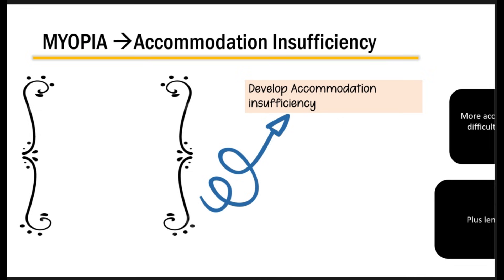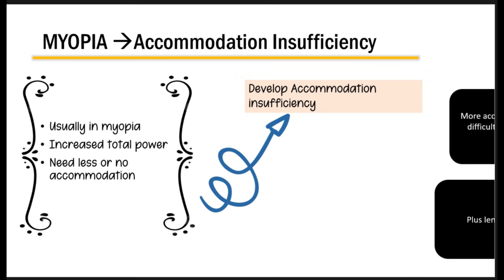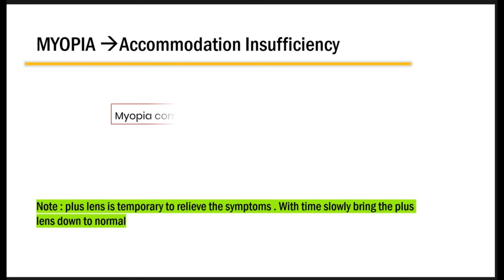There is a link between myopia and accommodation insufficiency. In myopia, the power of the eye is increased, so the patient has less need to accommodate, resulting in development of accommodative insufficiency. When treating myopia, give full correction in the form of minus glasses — any under-correction worsens accommodative fatigue by forcing more effort at near. You can also consider plus addition glasses for near as a temporary way to relieve symptoms, slowly reducing them over time.